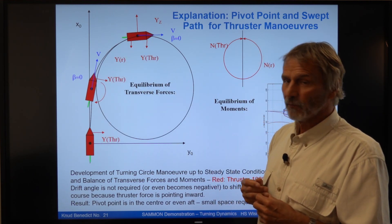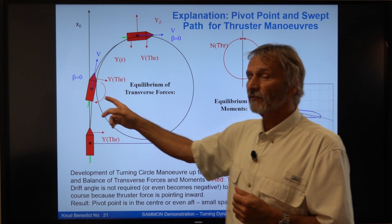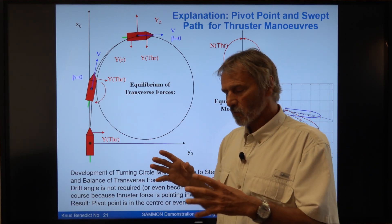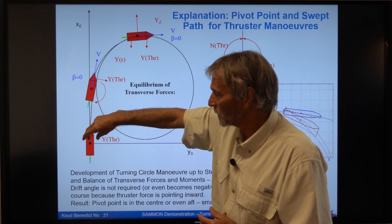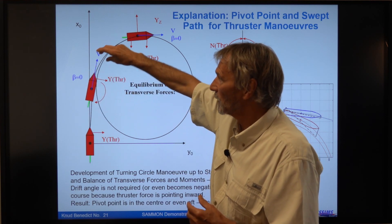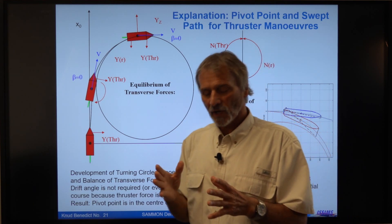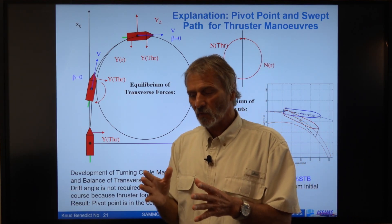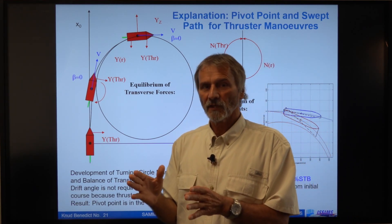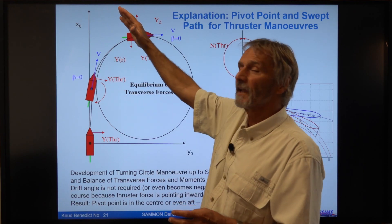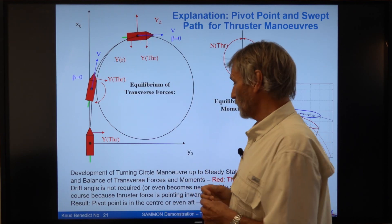And the other effect is, because there is no drift angle, there is no big swept path. The ship is like on a chain of pearls, and the swept path, the width of the swept path, is only the beam of the vessel. There's no big swinging out of the stern or the bow. So this is the advantage.